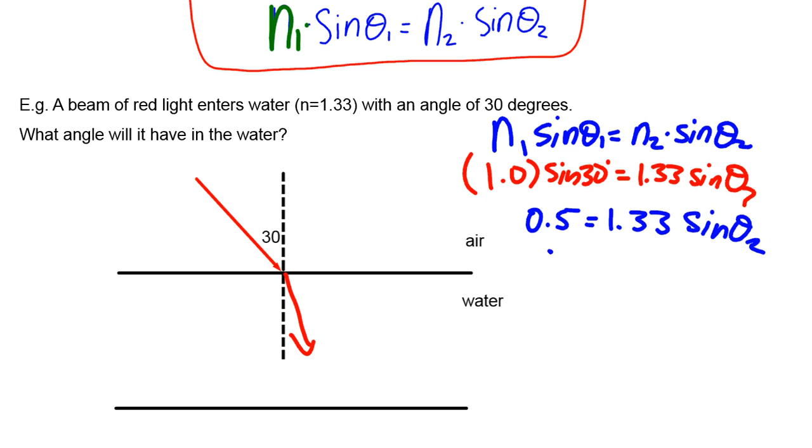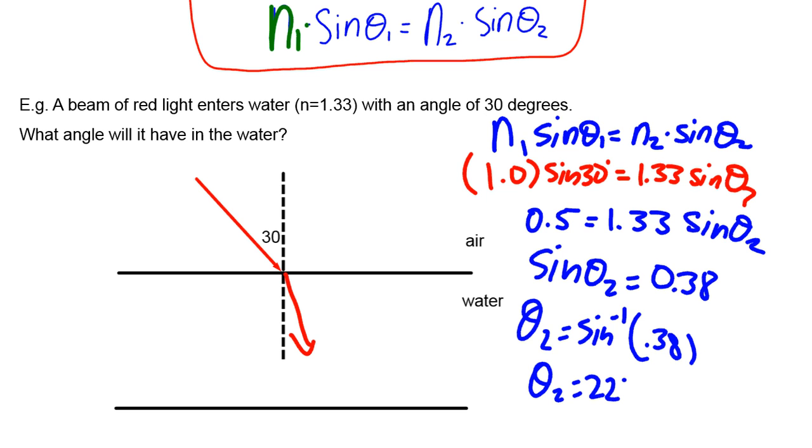Dividing over, we get sine theta 2 equals 0.38 approximately, just doing some rounding. That means theta 2 is the inverse sine of 0.38, which comes out to be approximately 22 degrees. We already predicted that it would be a smaller angle going into water, and now we know for sure that this angle is smaller, and it is in fact 22 degrees. Awesome. So there's refraction definition and a quick simple calculation.